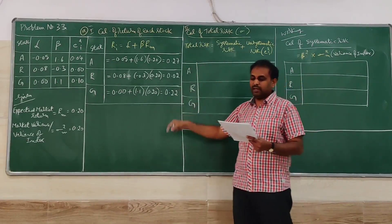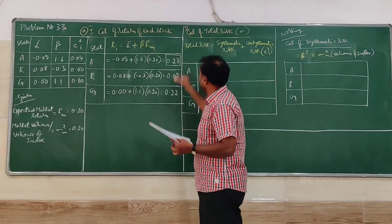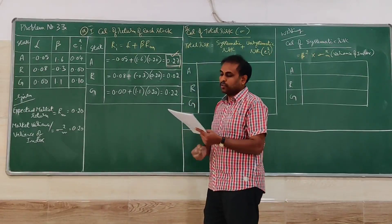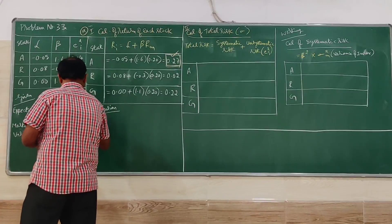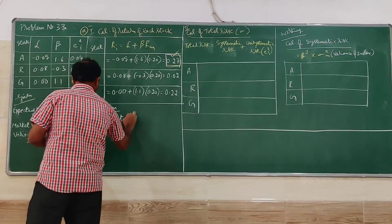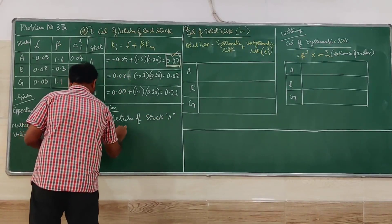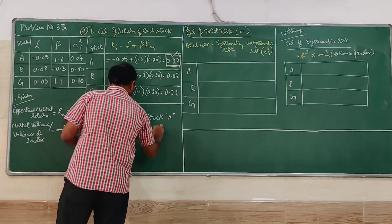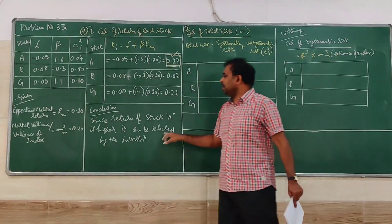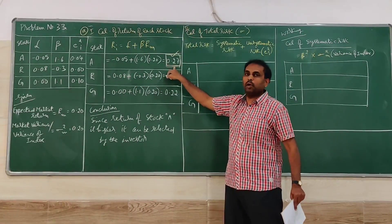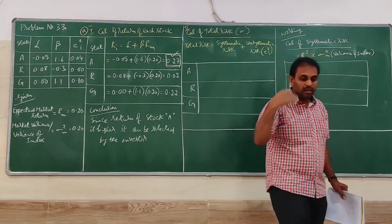From the return calculations, stock A has the highest return at 0.27, compared to R at 0.02 and G at 0.22. Based on return alone, stock A would be selected by the investor. However, the next step is to assess risk — return-based conclusion is noted, and we move on to risk calculation.